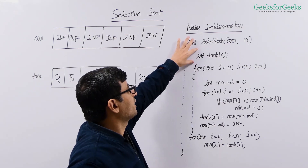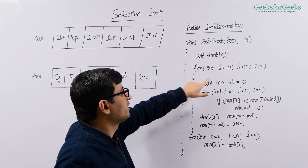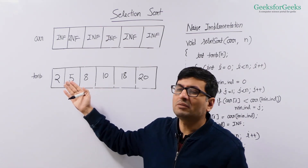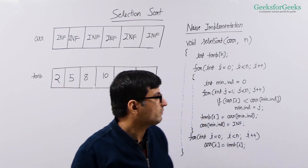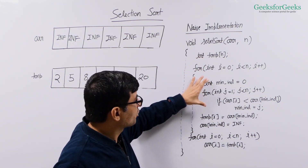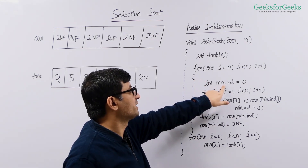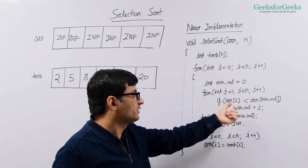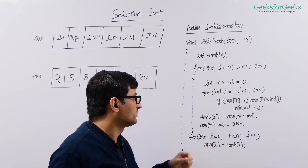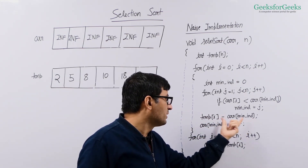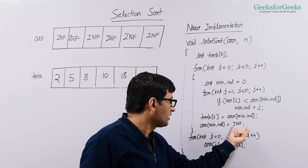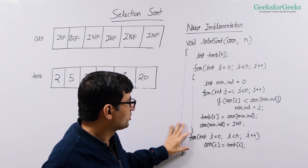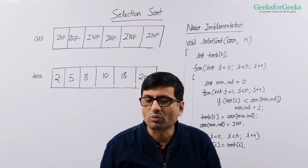Let's see the implementation. We have created a temporary array of the same size. We are traversing through the input array, and the index i decides where the next minimum has to be placed — so first time i is 0, we put 2 at index 0. Inside the loop, we find out the minimum element by initializing the minimum index to 0, then traversing from 1 to n-1 and comparing with the current minimum. If smaller, we update the current minimum index. Once found, we put the minimum element at index i and place infinity at the minimum element's index. At the end, we copy the temporary array back to the original array so that our original array is modified and sorted.